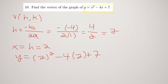2 squared is 4, minus 4 times 2 is negative 8, plus 7. So 4 minus 8 is negative 4, plus 7 is positive 3.